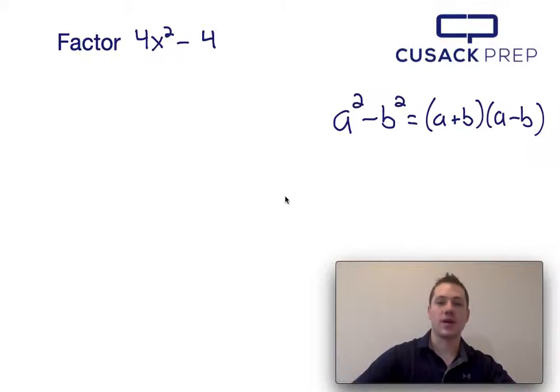Now the first thing we notice about 4x squared and 4 is that they're both perfect squares. Since we're subtracting these two values, we can solve this equation or factor it using the difference of squares, which I've presented over here on the right-hand side.